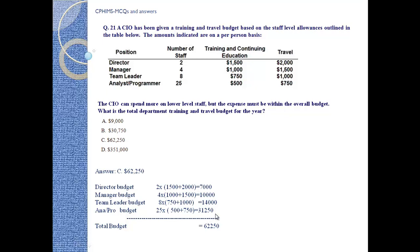Grand total when we sum all these numbers: $7,000 + $10,000 + $14,000 + $31,250 = $62,250. So the right answer is C, $62,250.